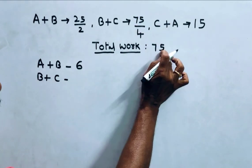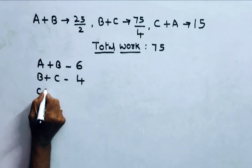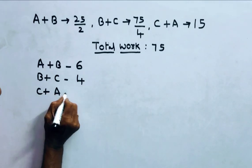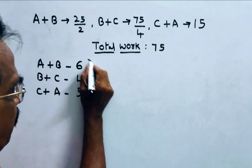Whereas B plus C, B plus C, 75 by 75 that is 4 units whereas C plus A, C plus A can do 75 by 15, 5 units of work per day.